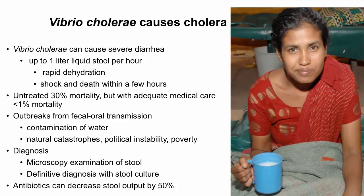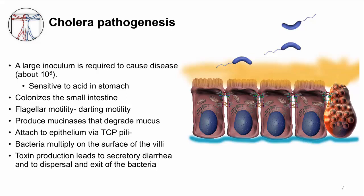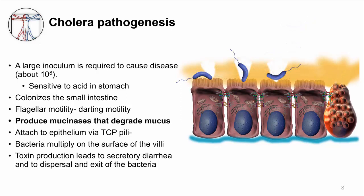To cause disease, a large dose of about 100 million bacteria is necessary. This is not hard to ingest because there are a billion bacteria per milliliter of stool. The reason such a large dose is needed is that Vibrio is not well adapted to humans and can die in stomach acid. The few that survive must colonize the small intestine during the asymptomatic period. Using their flagellum, Vibrio swim — called darting motility — to reach the surface of the small intestinal epithelium. One barrier to reaching the epithelium is mucus, a physical barrier. Think of it like barbed wire. Vibrio cholerae produces enzymes called mucinases that degrade the mucus so it can reach the cell surface.